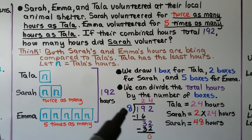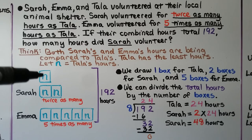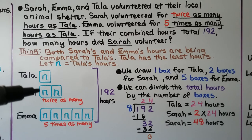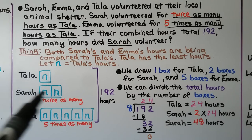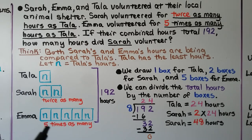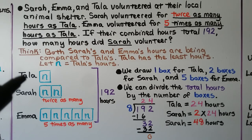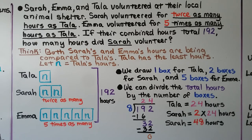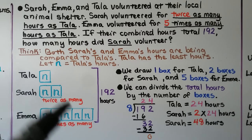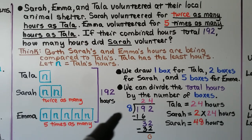We do 192 divided by 8, and we see that it's 24. That means Tala's N equals 24 hours. If Sarah is twice as many, we have 2 times 24 hours — Sarah volunteered for 48 hours. We needed Emma's five boxes to know we needed to divide 192 by 8. If we only divided by Sarah's two boxes and Tala's one, we wouldn't have gotten the right answer for Tala's hours. We needed all of their boxes to represent all the equal groups as eight equal groups.